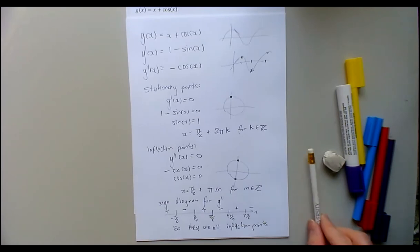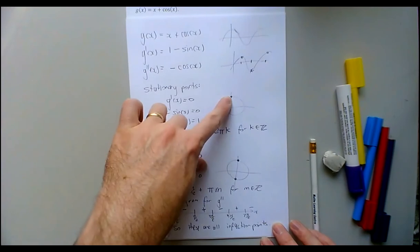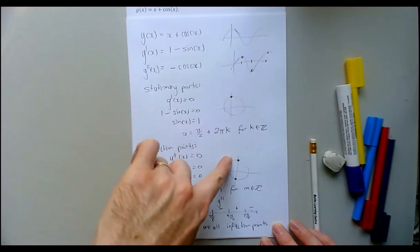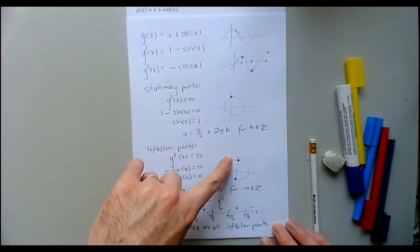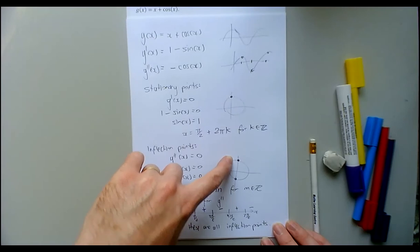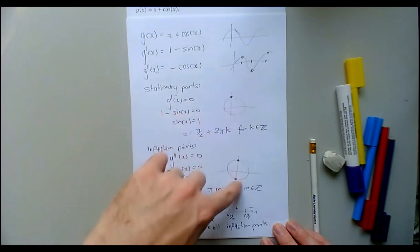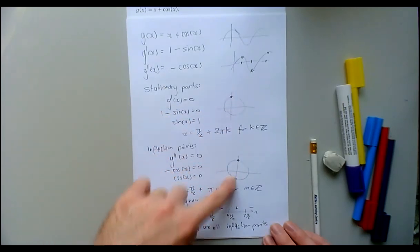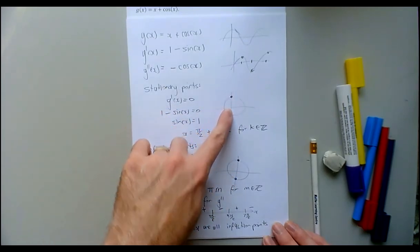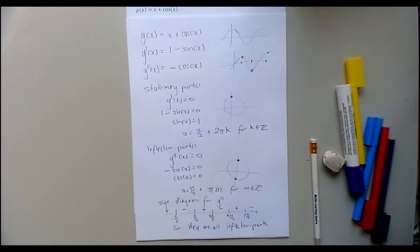This is a fascinating graph: it has stationary points that are all also inflection points, and then every other step there's another inflection point that isn't a stationary point. I really want to look at this graph, so I'm going to switch over to GeoGebra.